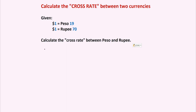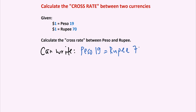What we can do is write the following. Because both 19 pesos and 70 rupees equal $1, we can set them equal to each other. From this statement, we can go two different directions — we can divide both sides, both numbers 19 and 70, by 19, or we can divide both sides by 70.